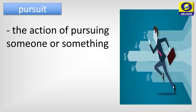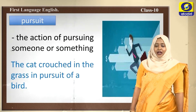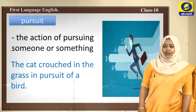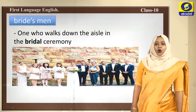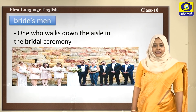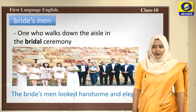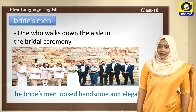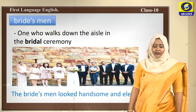The next word is pursuit, meaning the action of pursuing someone or something. Example: The cat crouched in the grass in pursuit of a bird — aiming at the bird, it jumped into the grass. The next word is bridesmen — one who walks down the aisle in the bridal ceremony. Example: The bridesmen looked handsome and elegant. Bridesmen are for the men who walk down the aisle; we also have bridesmaid. This is basically a European culture, and this poem is also about that culture.